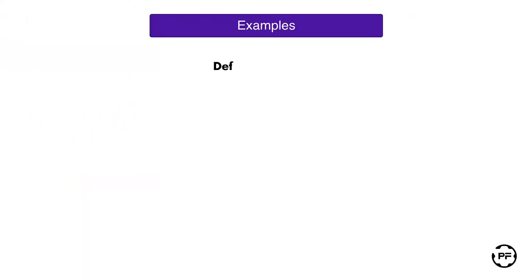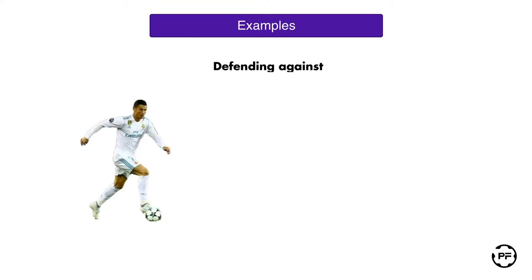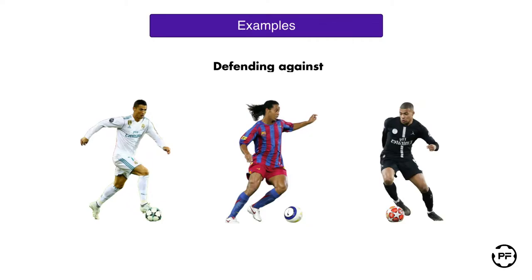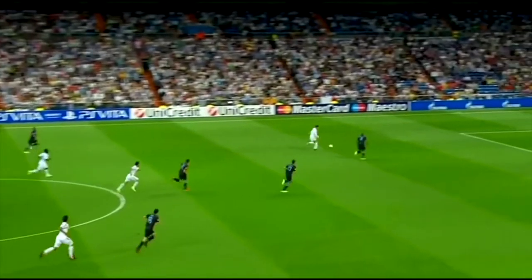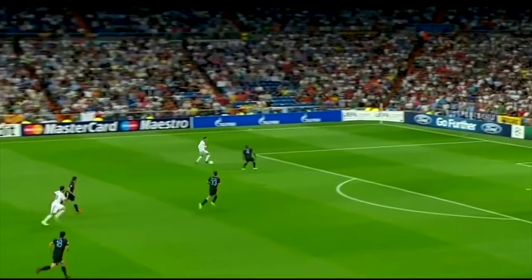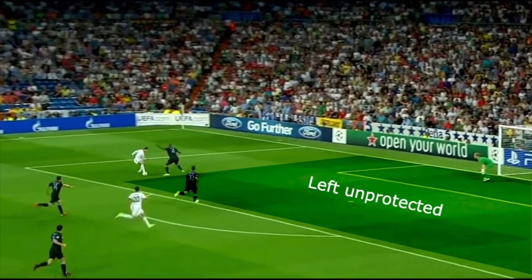Now that we know the necessary aspects of the skill, let's take a look at some real-life examples of defending against Cristiano Ronaldo, Ronaldinho, and Kylian Mbappe. In the first example you can see that Cristiano Ronaldo challenges Vincent Kompany in a one versus one situation. Here Kompany forgets to protect the middle area and Cristiano shifts to the right-hand side to make a dangerous shot on target.